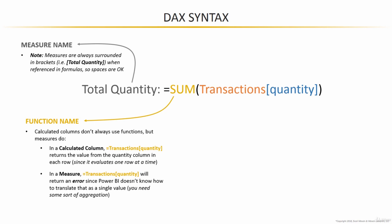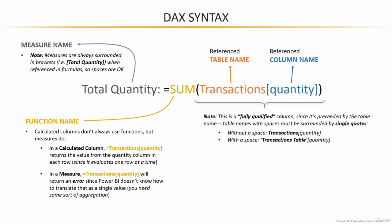The last two components are the table name in orange and the column name in blue. This example reflects what's called a fully qualified column, since it's preceded by the table name. As noted when working with the query editor, table names with spaces have to be surrounded by single quotes — here's an example with and without a space.